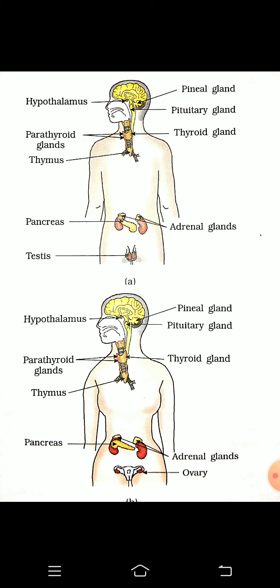Till now we have learnt about the nervous system and we came to the conclusion that in the nervous system, electrical impulses are carried by nerve cells. This is a faster transmission, but there are some limitations of the nervous system.